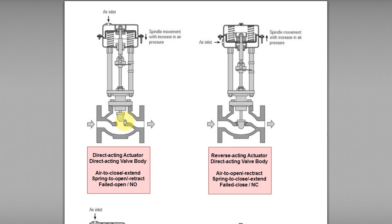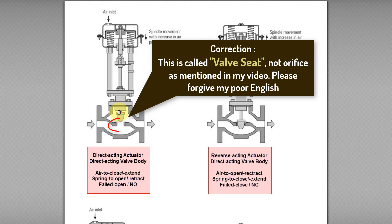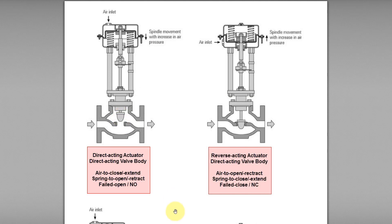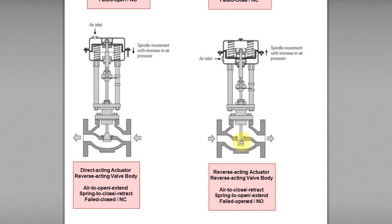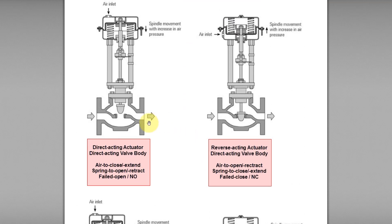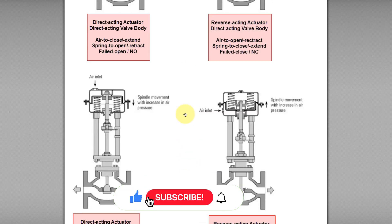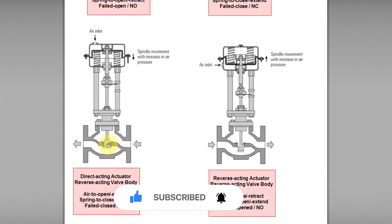For the valve body, how do we know if it is direct acting or reverse acting? We look at the plug location. If the plug is located above the valve body orifice, it is called a direct acting valve body. If the plug is located below the orifice, it is called a reverse acting valve body. In this example, these two plugs are located above the orifice — when the stem goes down, the plug closes the orifice — so these two valve bodies are direct acting. The other two control valves have the plug located below the orifice, making them reverse acting valve bodies.